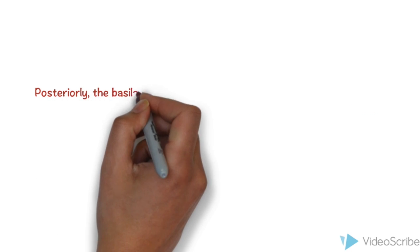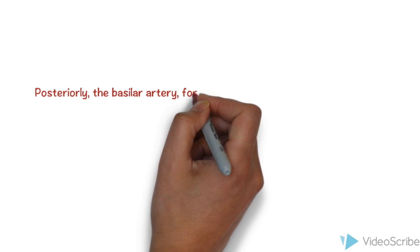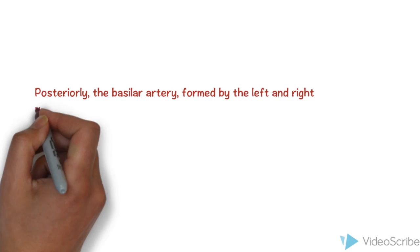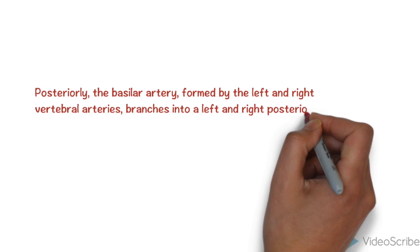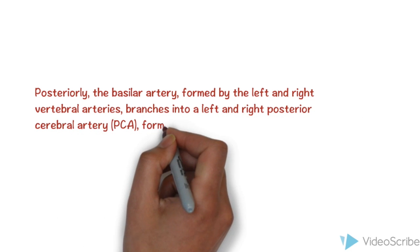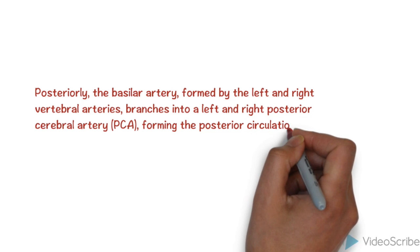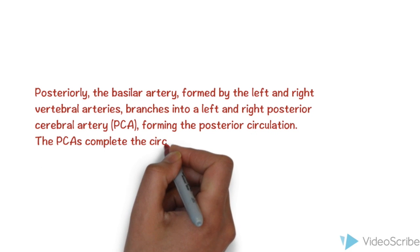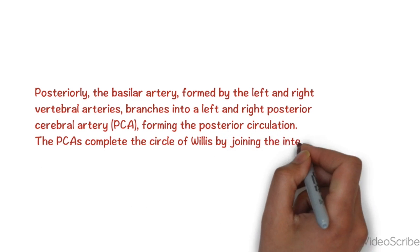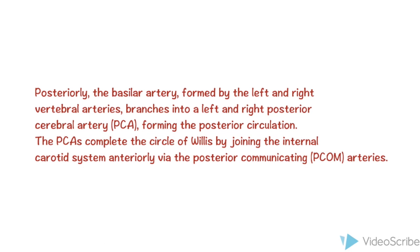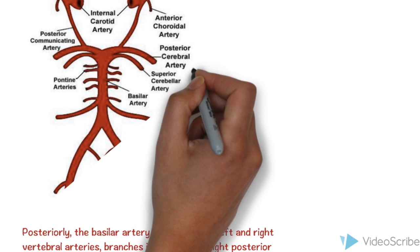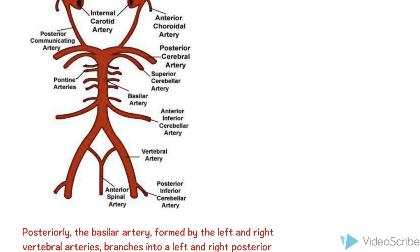Posteriorly, the basilar artery, which is formed by the left and right vertebral arteries, branches into the left and right posterior cerebral artery, forming the posterior circulation. The posterior cerebral artery completes the Circle of Willis by joining the internal carotid artery system anteriorly via the posterior communicating artery. Take a good look at this diagram and appreciate the posterior circulation of the Circle of Willis.